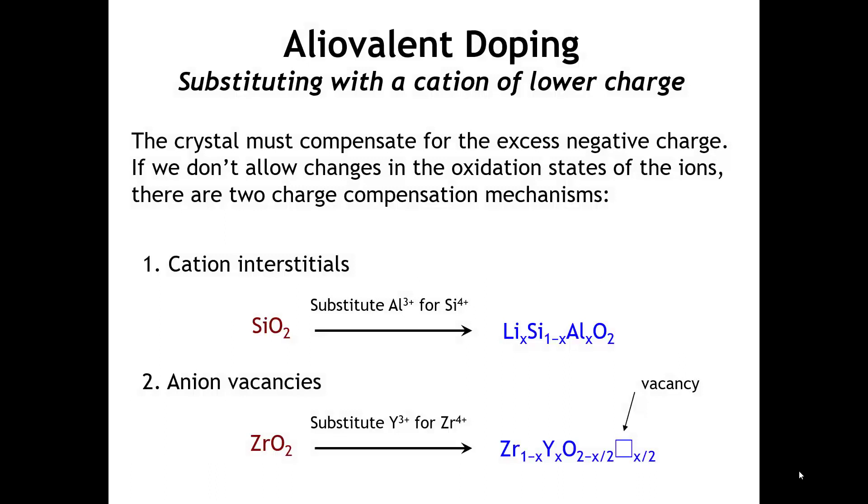The other side of the spectrum is aliovalent doping where we substitute a cation that reduces the positive charge. If we take an SiO2 network and substitute aluminum 3-plus for silicon 4-plus, we don't have enough positive charge. To compensate, we could have cation interstitials. For example, lithium cations going into the structure. So for every silicon replaced by aluminum, we end up with a lithium interstitial.